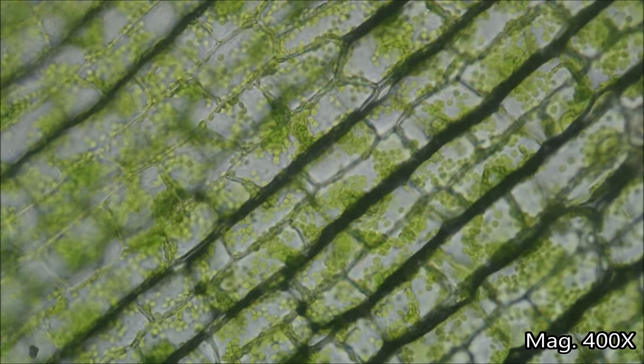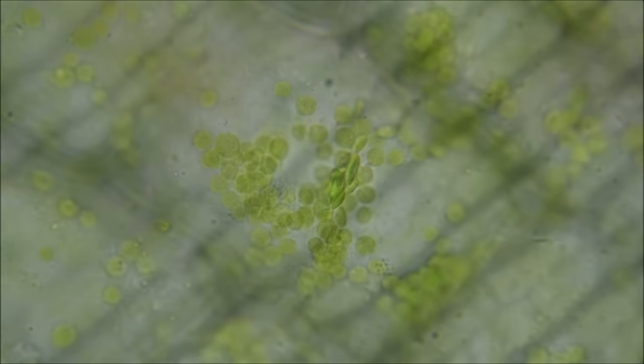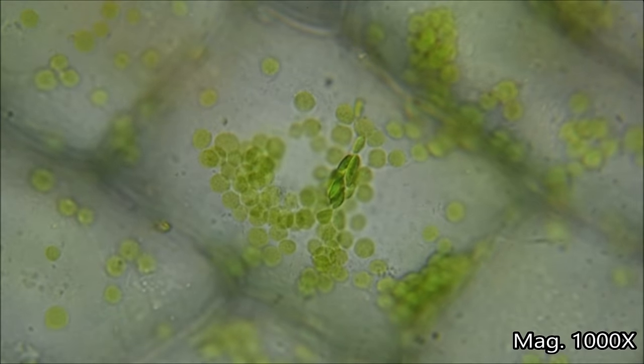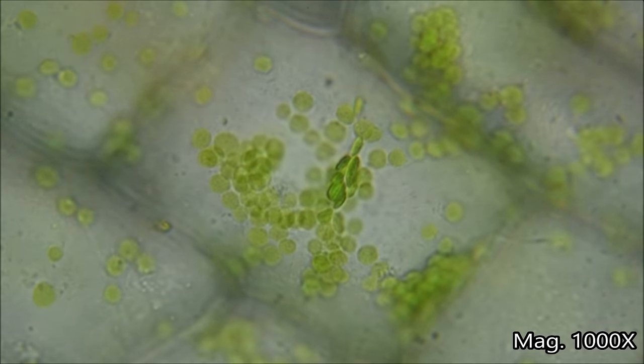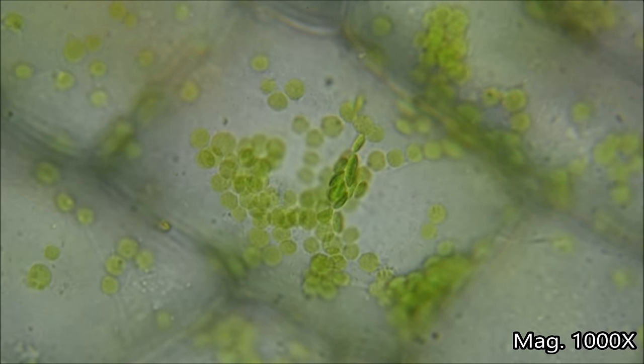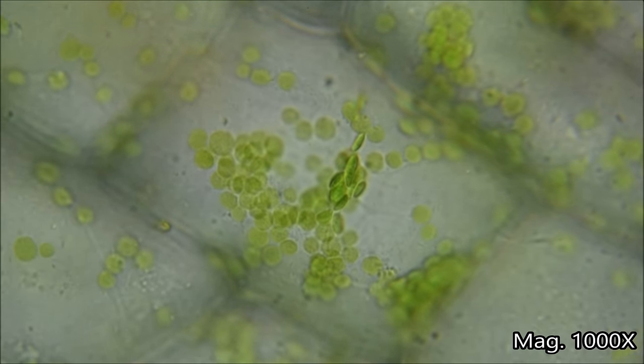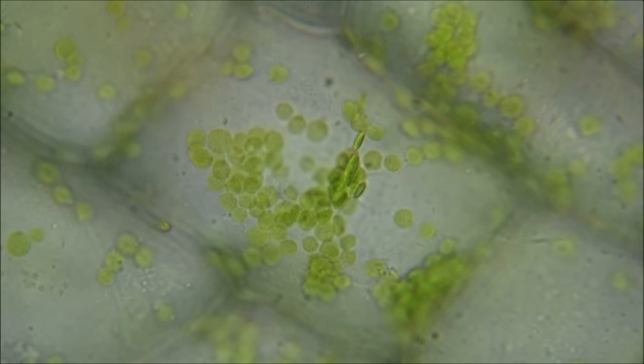Chloroplasts can move around in order to get more sunlight when there is little light or move away from strong direct sunlight to avoid damage. Just like humans, too much sun can be bad. This process of chloroplasts moving to control light exposure is called photorelocation.